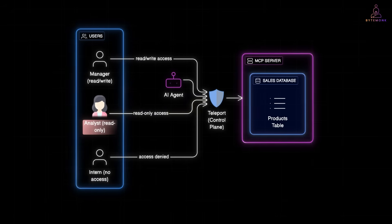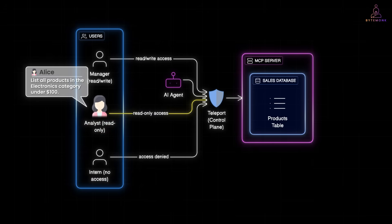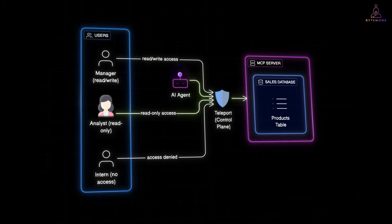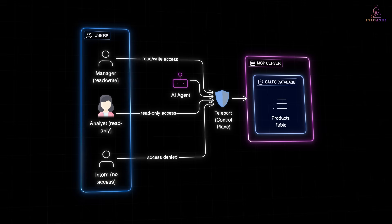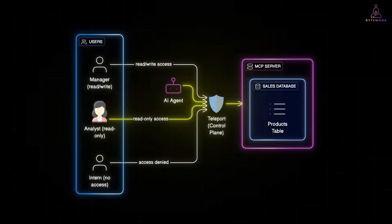Alice, who is an analyst, asks her AI assistant: list all products in the electronics category under $100. The AI translates that into a SQL query. That query flows through MCP, hits Teleport, and Teleport checks Alice's identity and role. She is allowed. Teleport issues a short-lived certificate, forwards the query to the database, and sends the result back. From Alice's perspective, she just got the answer from the AI. But behind the scenes, Teleport enforced RBAC and logged: Alice via AI queried products — access granted.